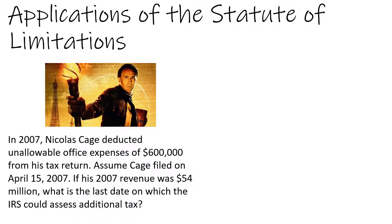Let's look at the application of the statute of limitations. Nicholas Cage, the somewhat famous actor, has been in trouble with the law a couple times for attempting to swindle the IRS. In 2007, he deducted $600,000 of unallowable office expenses from his tax return. If he filed on April 15th, 2007, and his 2007 revenue was $54 million, what is the last date on which the IRS could assess additional tax?